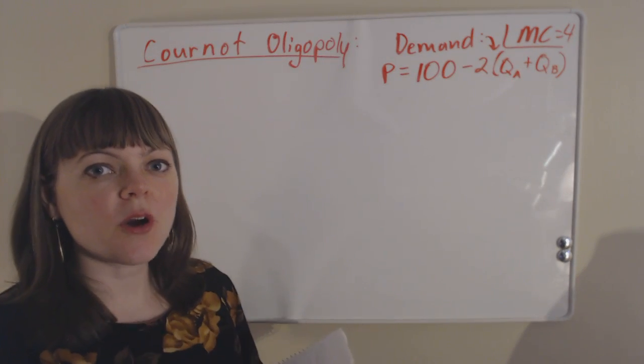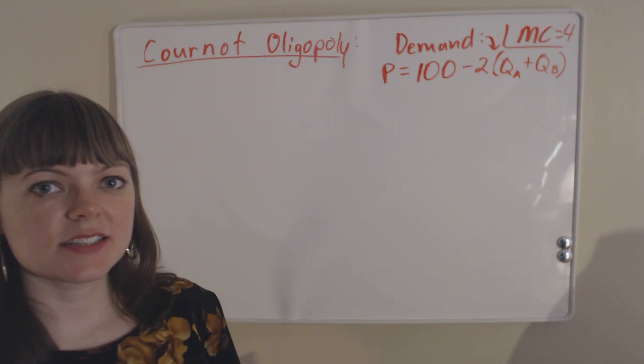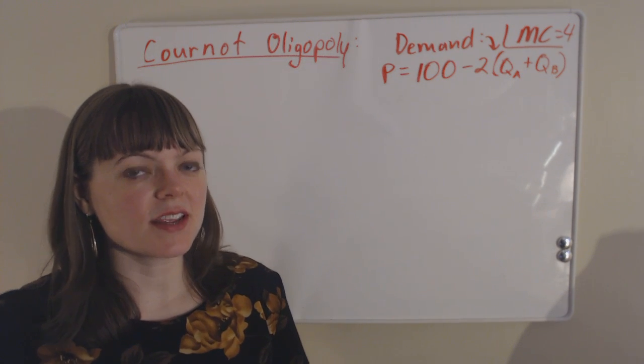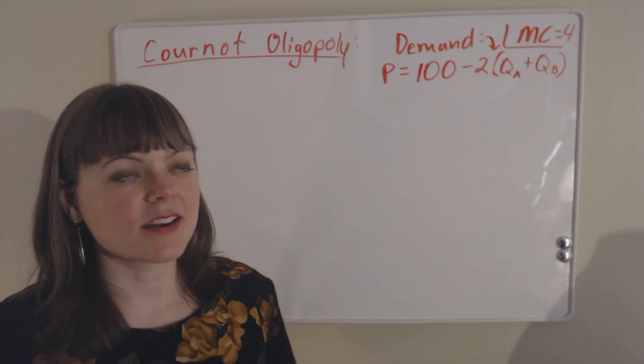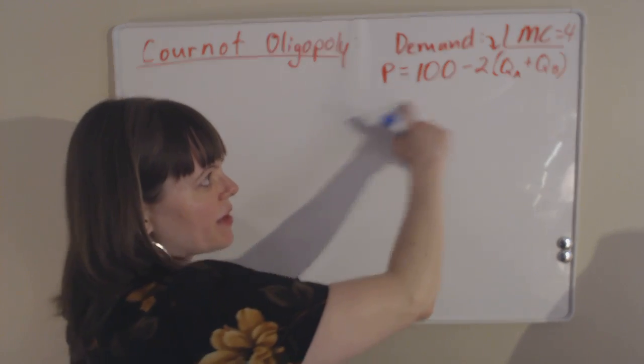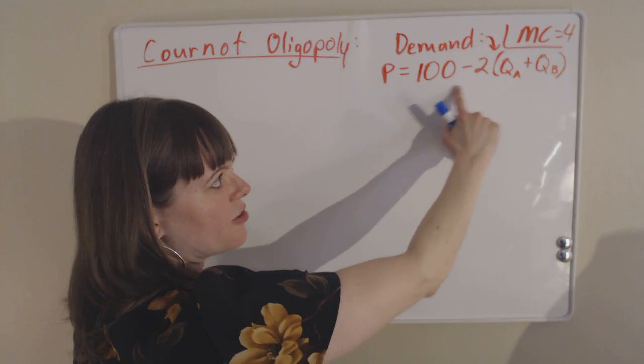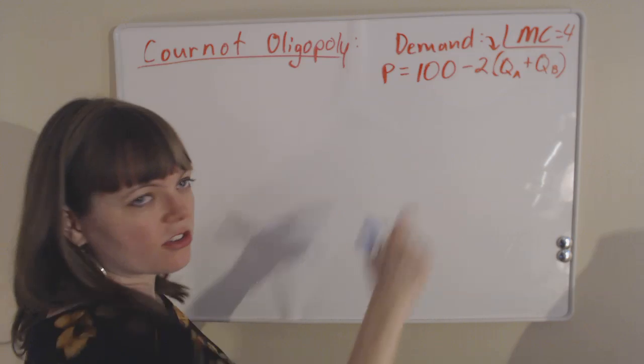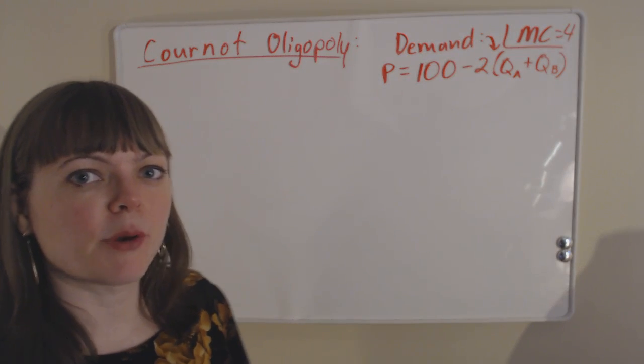Okay, so I'm going over a Cournot oligopoly problem. This is a simultaneous moves problem where both firms choose their quantity and then reveal the quantity, and the market price is set based on the demand curve. In this case, the demand curve is price equals 100 minus 2 times the total market quantity, and the marginal cost of production is 4 units for both firms.